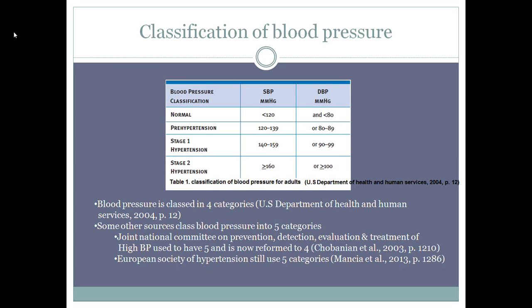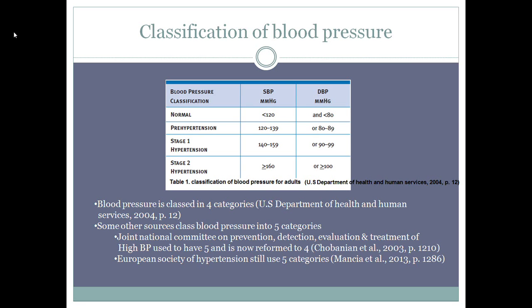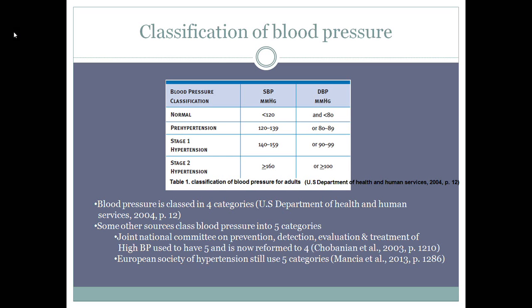Classification of blood pressure. The US Department of Health and Human Services classify blood pressure into four stages: normal, prehypertension, stage 1, and stage 2 hypertension. Cobbanyan and colleagues from the Joint National Committee on Prevention, Detection, Evaluation, and Treatment of High Blood Pressure also classify their blood pressure categories in the same way.